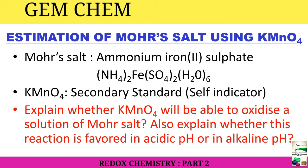Mohr salt is actually ammonium iron sulfate: (NH4)2Fe(SO4)2·6H2O. KMnO4 we know is potassium permanganate, and this is a secondary standard and it acts as a self-indicator. Before knowing how to estimate, we need to know whether it is possible to undergo this redox reaction, and if possible, then at which pH. That is, explain whether KMnO4 will be able to oxidize a solution of Mohr salt, and also explain whether this reaction is favored in acidic pH or alkaline pH.